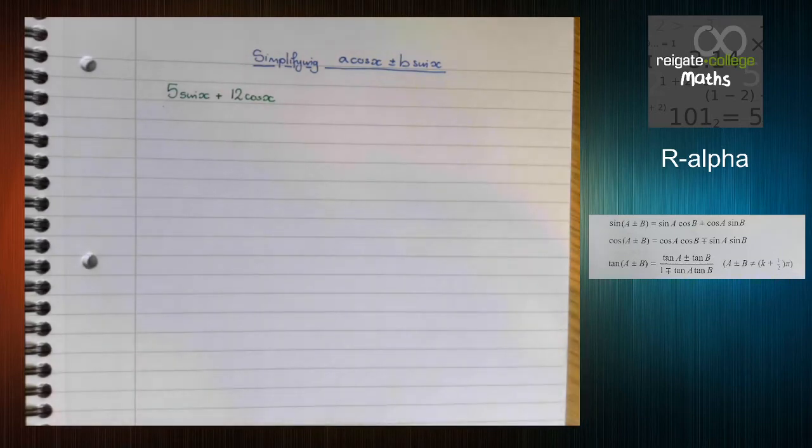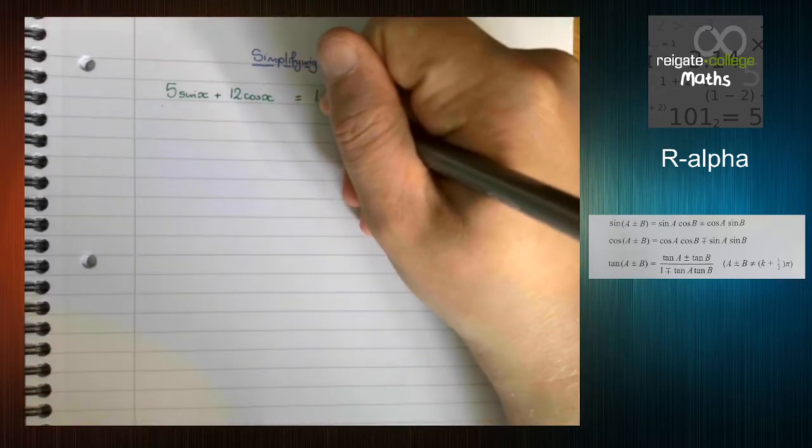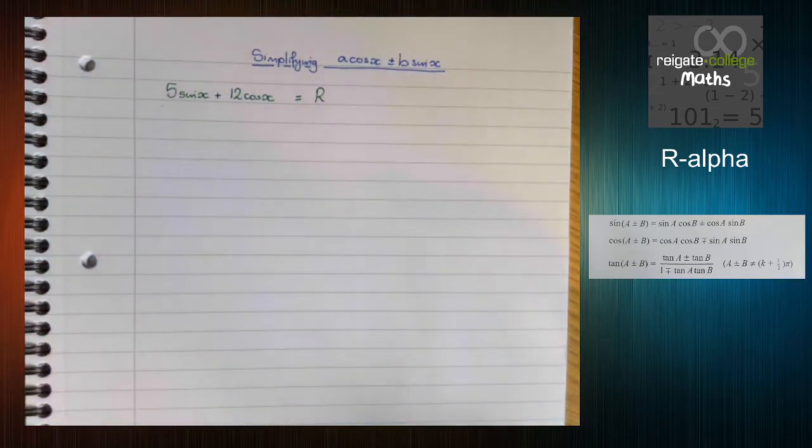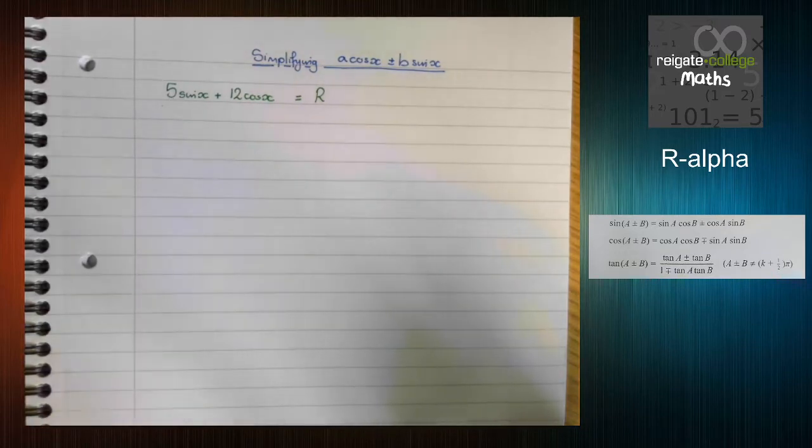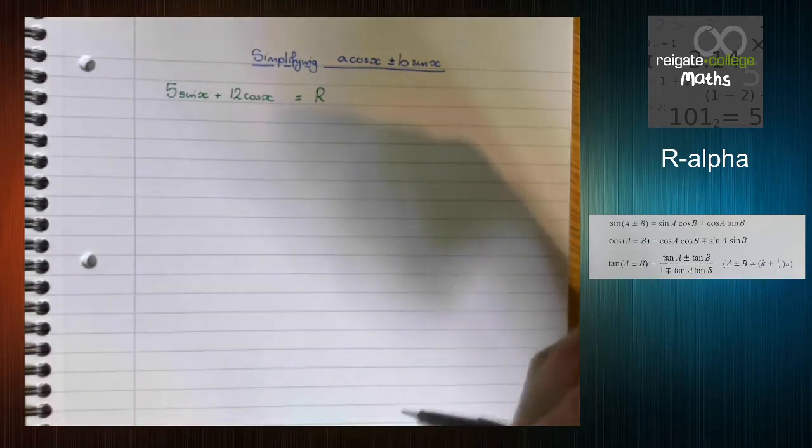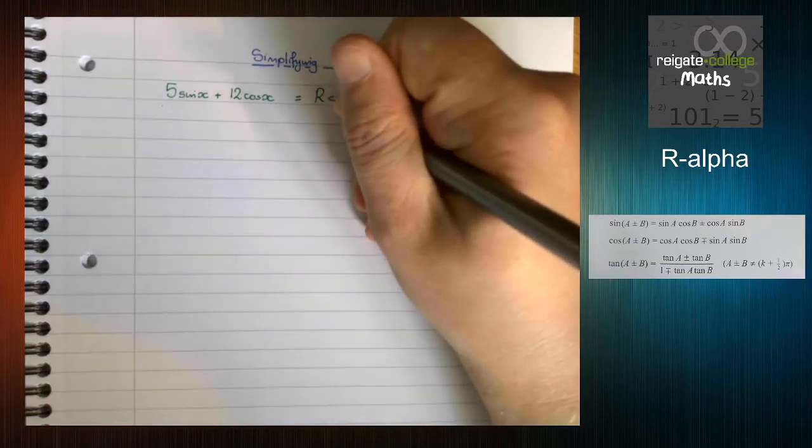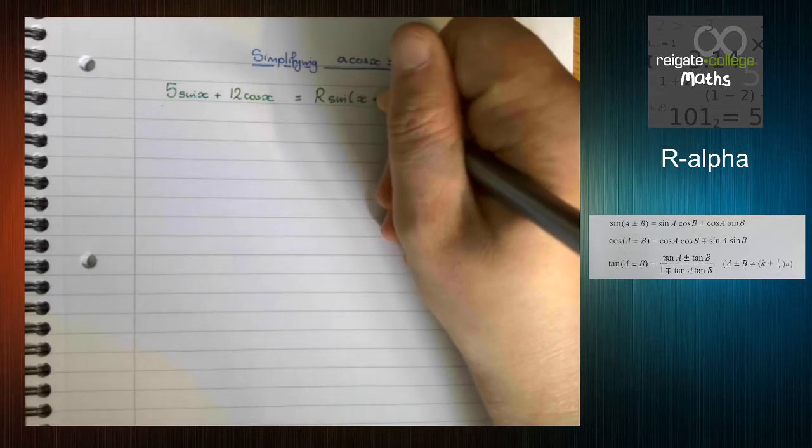So being able to express this in a single trig function gives us the ability to make those connections. What do those trig functions look like? Well, they're going to use the addition formulae, as you can see on the right of your screen. Really we're only going to be using those first four, the sine and cos ones. We're not going to use tan for these.